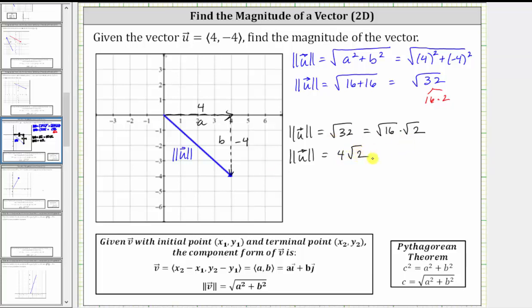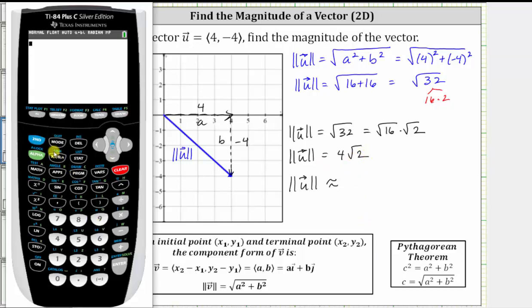Let's also get our decimal approximation to, let's say, two decimal places. Going to the calculator, we can enter the square root of 32 or four square root two to get the decimal approximation. And let's go ahead and show both. Second x squared brings up the square root of 32, enter, or four square root two, of course, gives us the same result. Because we have a six in the third decimal place, if we round to two decimal places, the magnitude would round to 5.66.